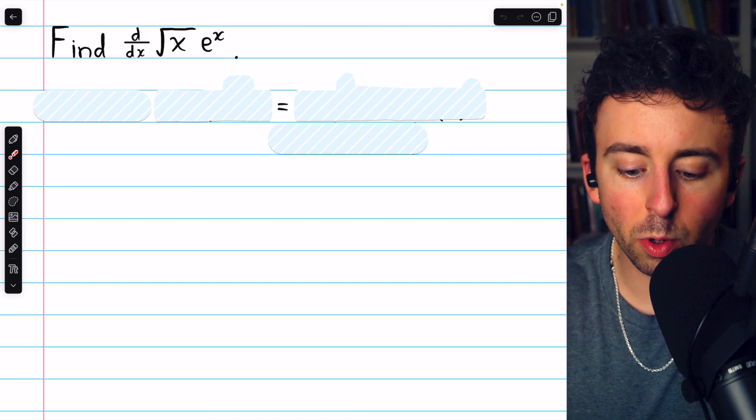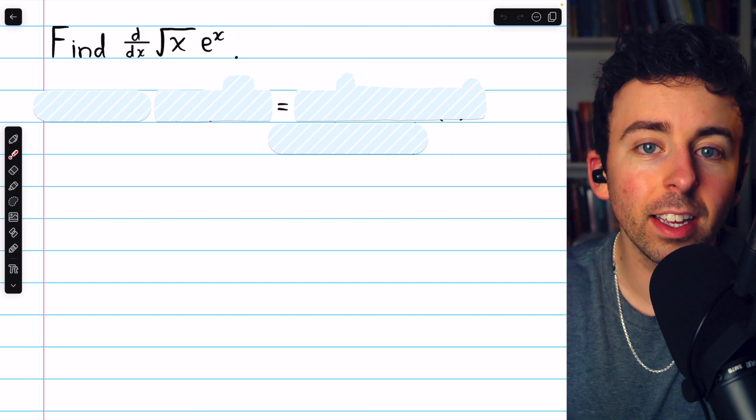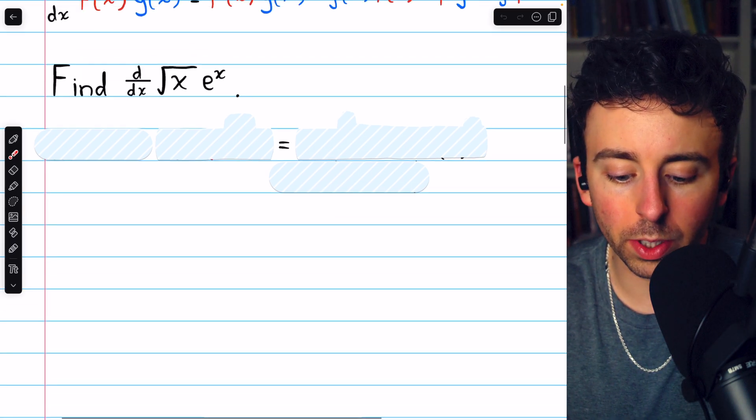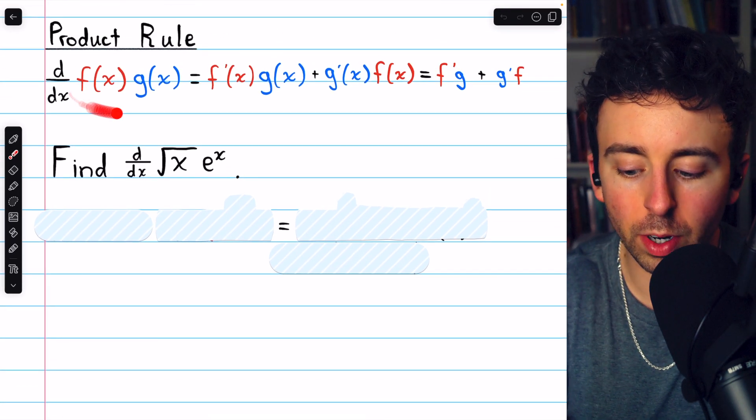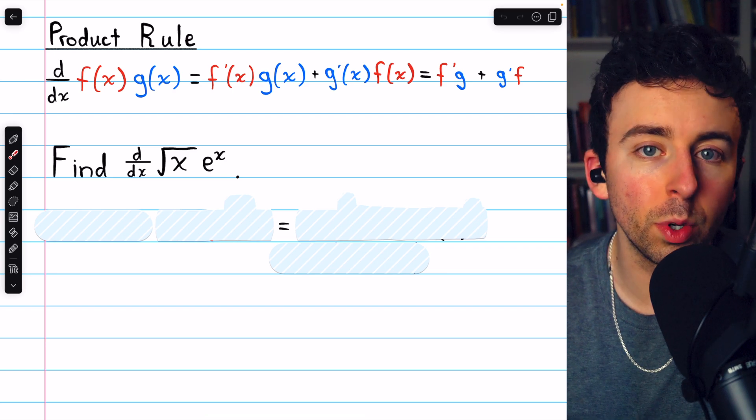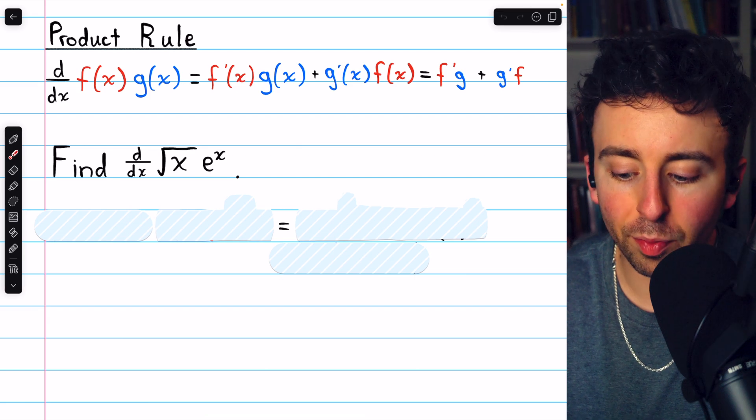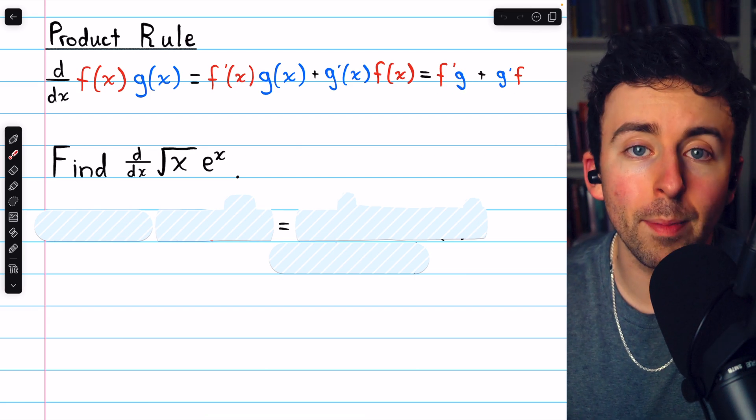Let's find the derivative of the square root of x times e to the x. Since this is a product of functions, to find its derivative we will need the product rule, which I've written here for your reference. If we have a function f times g, the derivative of that product is f prime g plus g prime f.